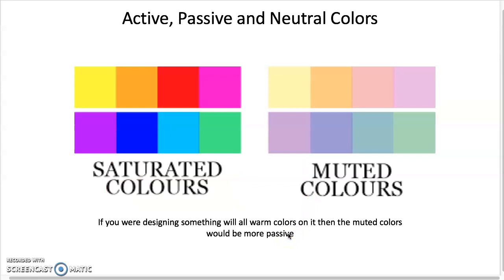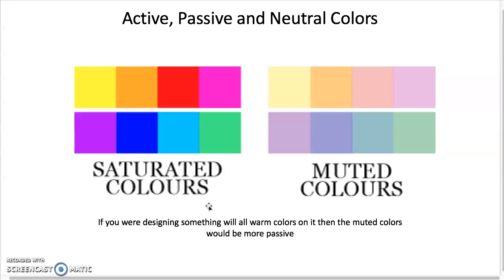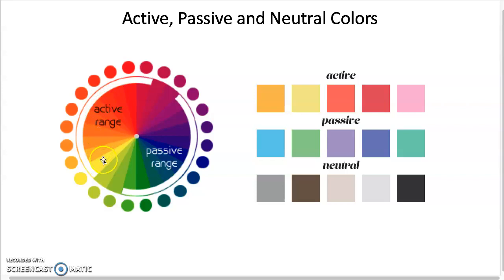Colors can also be active, passive, or neutral. Active colors are moving forward; passive ones sit back. Neutral colors — not achromatic grays, but tans and browns — are in between. If you design something with warm, saturated colors, the muted colors become passive. If everything is neutral, even a muted color becomes very active. In general, bright warm colors are the most active; cooler colors are passive; and neutrals include browns, tans, and black and white.